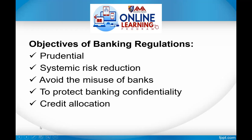So what are the objectives of banking regulations? Why do governments impose such requirements or restrictions? There are five basic objectives of banking regulations: first, prudential; second, systemic risk reduction; third, to avoid the misuse of banks; fourth, to protect banking confidentiality; and fifth, credit allocation.